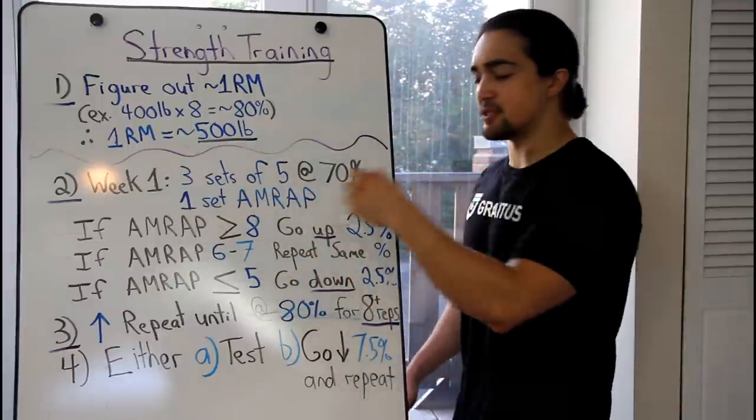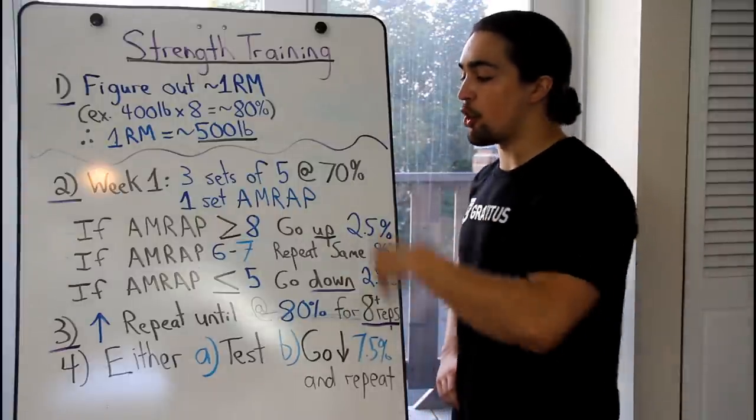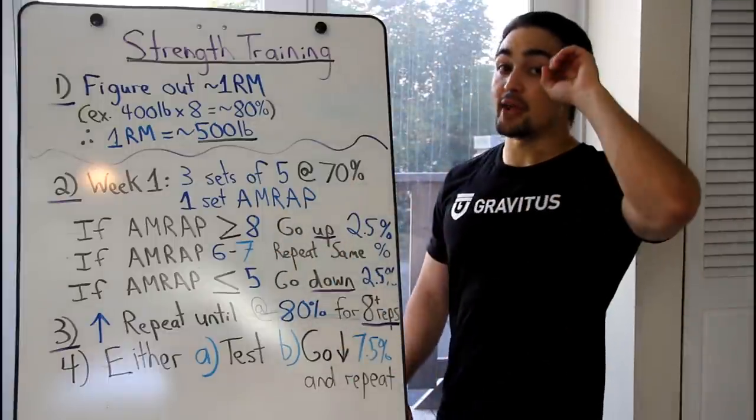And so what you'll do after that, you'll assess. You get 11 repetitions. Cool. You take a look at this chart here. For your AMRAP, if you get eight or more, you'll go up in weight. If you get six to seven, you stay at that percentage. Five or less, you actually go down two and a half percent.